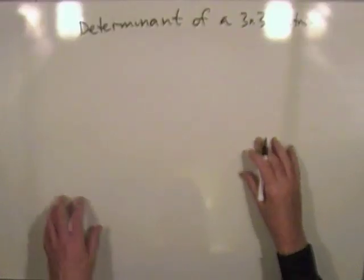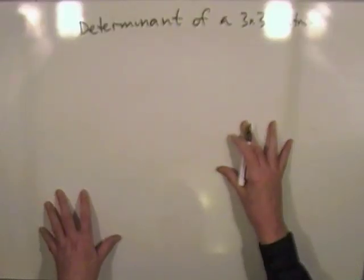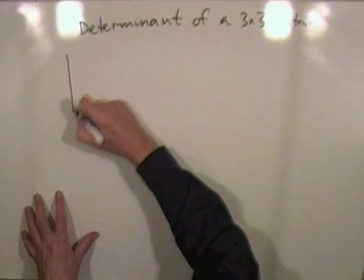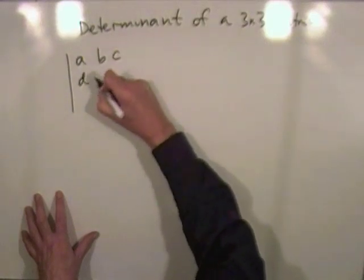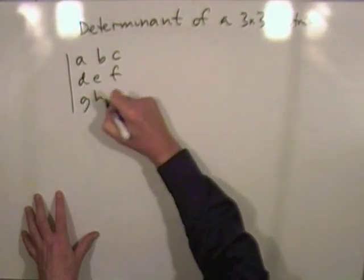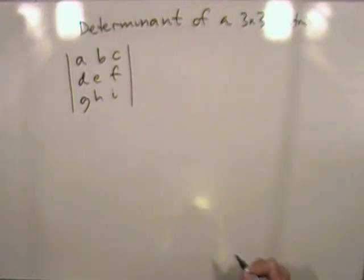An alternative way of finding the determinant of a 3x3 matrix: start off with a general matrix A, B, C, D, E, F, G, H, I, finding the determinant of that.